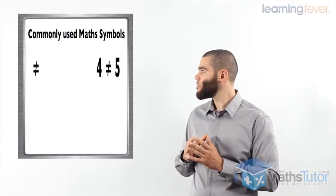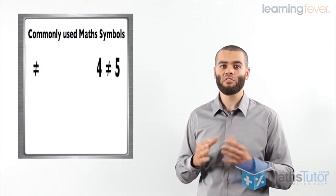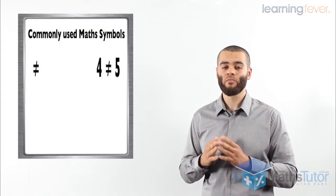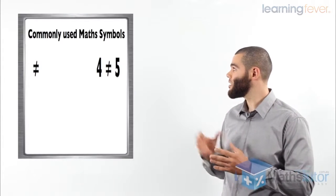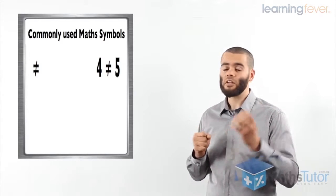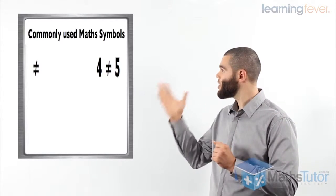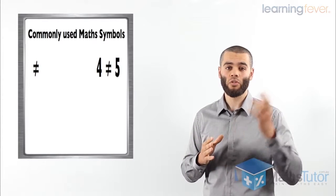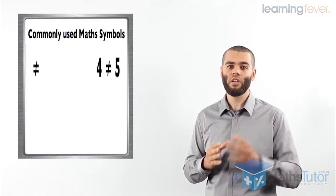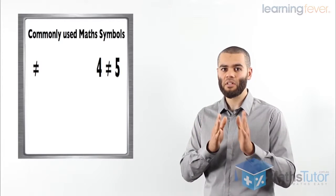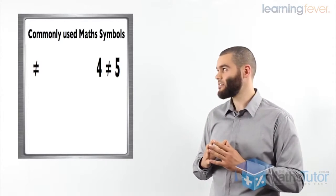Then we have what we call the not equal to symbol, which is an equal sign with a slash going through it. As the name suggests, it means a number is not equal to another number. For example, 4 is not equal to 5, 10 is not equal to 11, or 15 is not equal to 20 — this answer does not equal that answer.